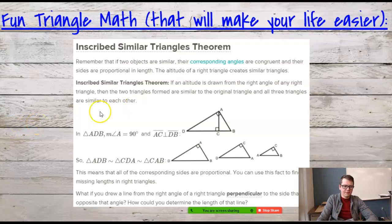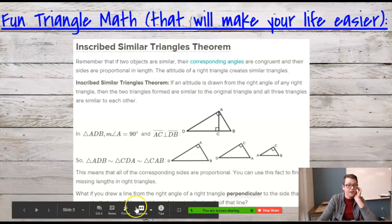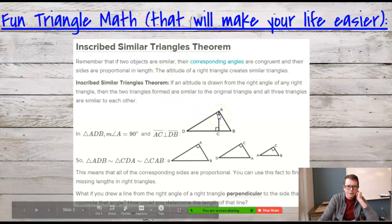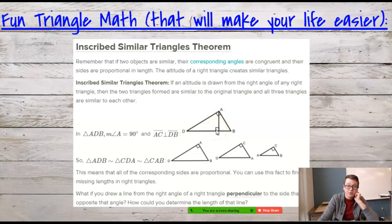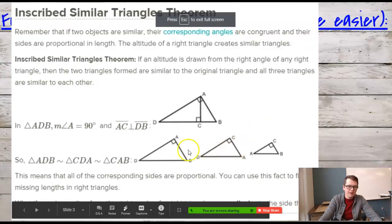Alright, read this for a second. So, this is the proof that I was kind of trying to quickly explain last week and I realized, or last time we met, I realized I was going too fast. So, from the right angle, if we drop an altitude to make another right angle on what was originally the hypotenuse, what we create is three similar triangles.